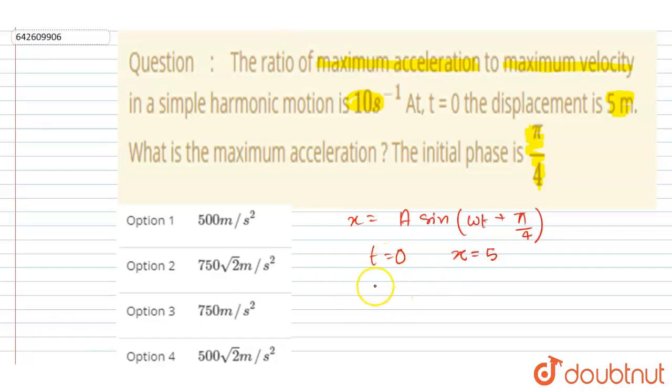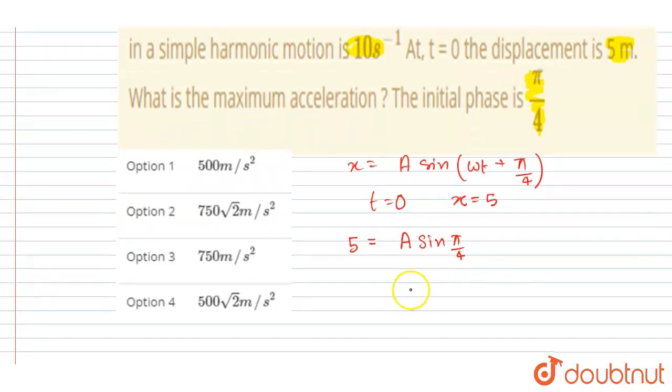You will get x = 5, and this is A, and I took t = 0, so I will get sin(π/4). So sin(π/4) is 1/√2. So if I put the value of sin(π/4)...